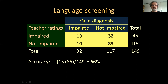How accurate is this teacher rating instrument in classifying the children correctly into the impaired and non-impaired categories? Accuracy is the total number of correctly classified children divided by the total — the same as what we called agreement before when the two variables were seen more symmetrically. Now there is a clear asymmetry, so we can use detection terminology. If there is a valid classification taken to be true, we can evaluate any other instrument attempting to replicate that classification.